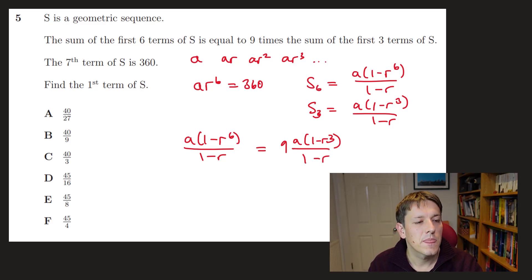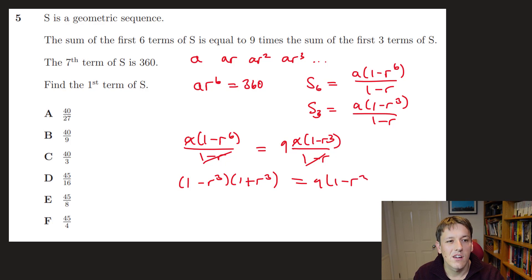So I've got a(1-r⁶)/(1-r) = 9a(1-r³)/(1-r). So I get the a's cancelling here and the (1-r)'s cancelling. And if you're clever about this, in fact, (1-r⁶) you can write as a difference of two squares: (1-r³)(1+r³) = 9(1-r³). So I can actually cancel out a (1-r³) here. Alternatively, you might try and think about what you've got left as a quadratic in r³, disguised quadratic. That would also be fine, but I like this method. So I get r³ = 8 and r = 2.